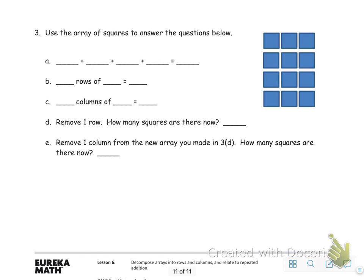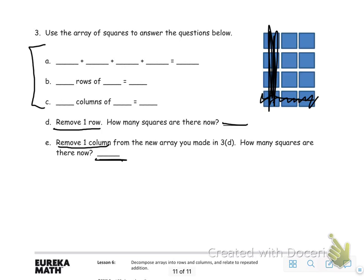This is exactly the same as the problem set — do everything just as described. Then come down and remove one row: take a row out and answer how many squares are there now. Then remove one column, take that out, and fill in that blank. Hopefully this has been helpful.